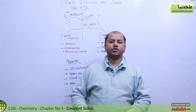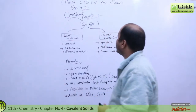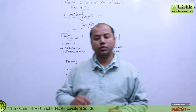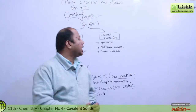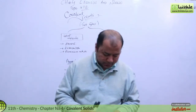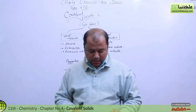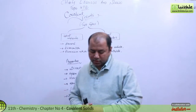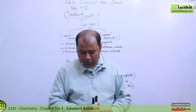Okay students, in today's lecture I'm going to talk about liquids and solids, sections 7.4 and 7.2. The new topic is covalent solids. Covalent solids are called atomic solids because they are composed of neutral atoms of the same and different elements.